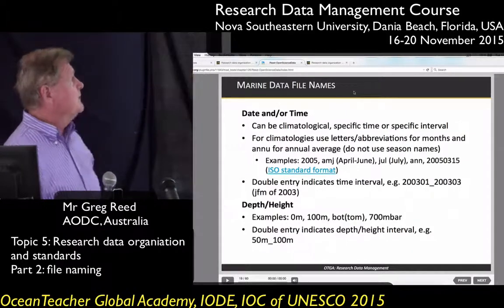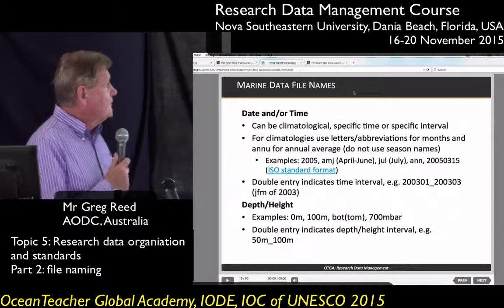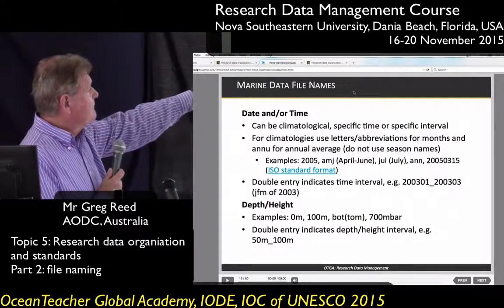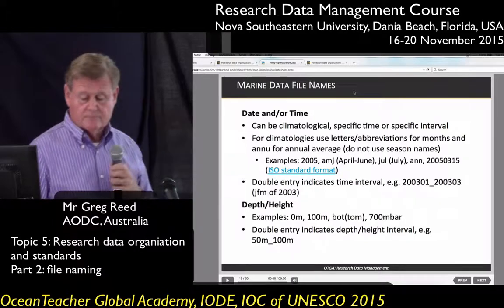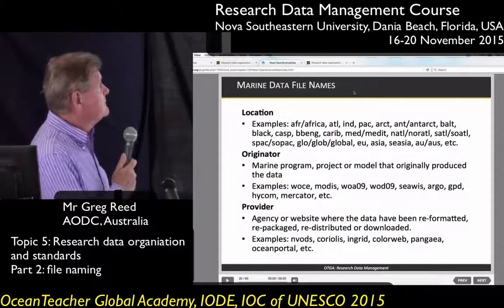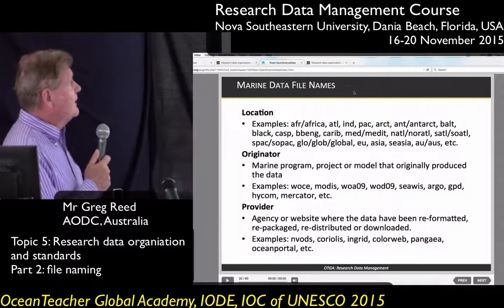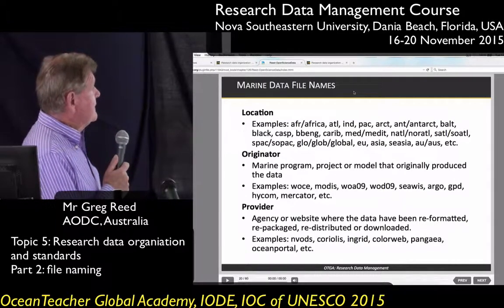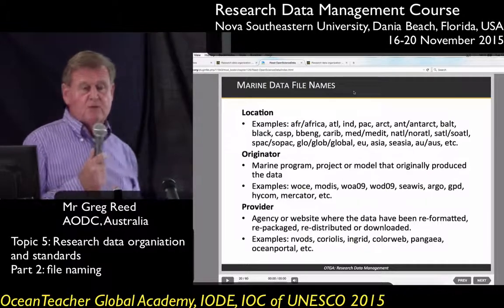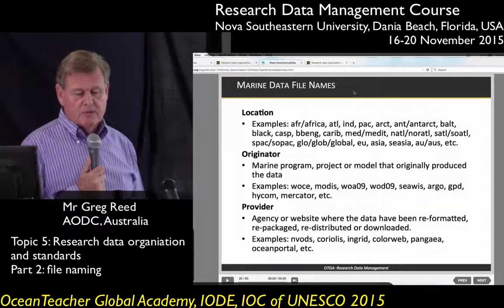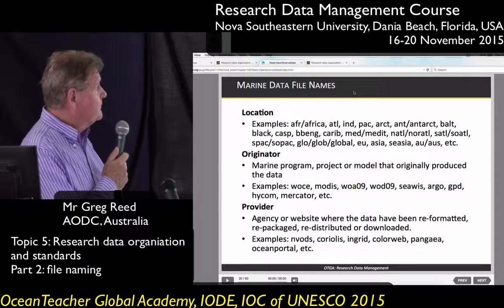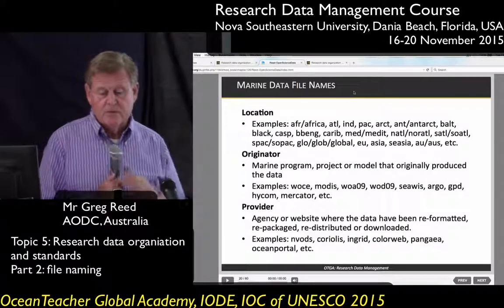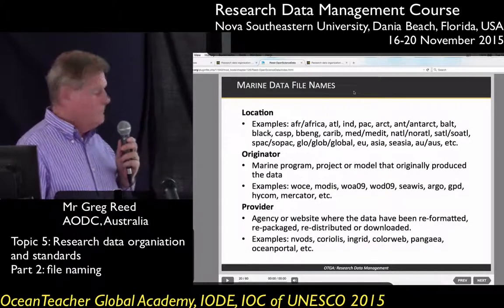If it's a time interval you can put two dates. For height and depth, you put in the depth or a double entry for a range. Location — it's always a good idea to put in the location: whether it's a continent, a country, or an ocean. You can also include where the data comes from — the program or project — such as WOA, MODIS, or World Ocean Atlas. The provider: if the data is coming from another agency, you can add that to your file name.